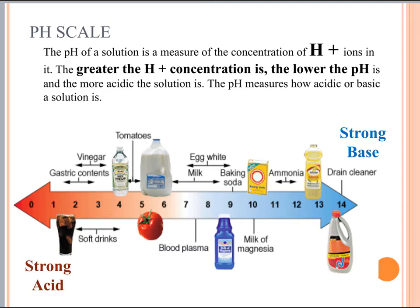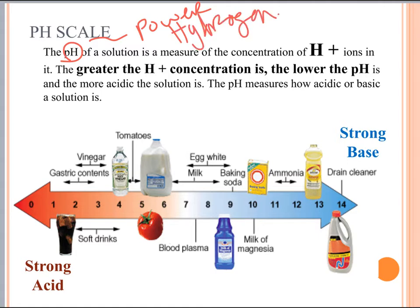Alright, so pH scale — we asked a couple of questions on the pre-test that have to do with this. What you should know about the pH scale is that it goes in powers of ten. pH literally stands for power of hydrogen, so it is the power of the hydrogen ions. They go up by powers of ten. The higher the concentration of H+, the lower the pH, so it goes kind of the opposite way. A pH of one is going to be very, very strong acids.